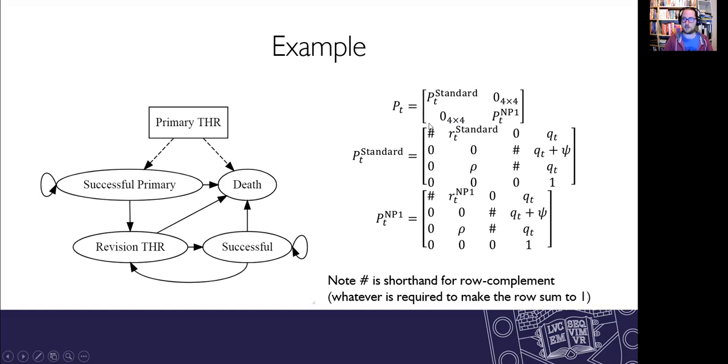So that top left block is the standard prosthesis and in here you'll see that there's a risk of dying in each cycle QT. If you're having a revision operation there's an additional risk of dying which is psi so that's the operative mortality rate. We also have this row parameter that's the risk of re-revision being needed. And then the thing that differs between the two arms other than cost is this risk of needing your primary hip replacement to be revised. So there's r subscript t standard r subscript t NP1 and in that Markov cohort simulation these are given by Weibull model.